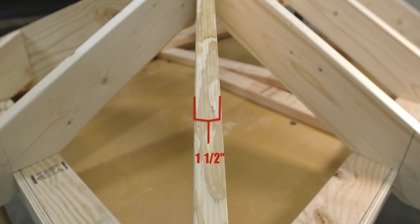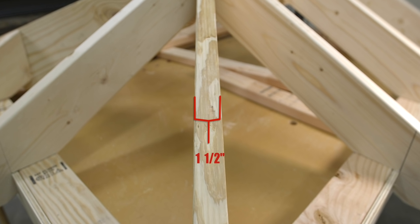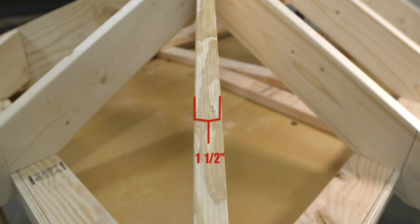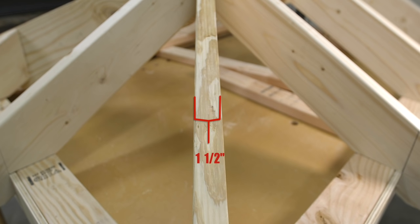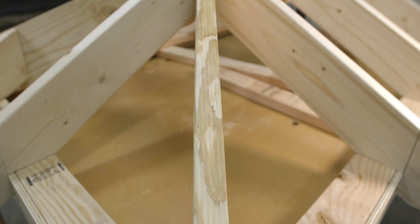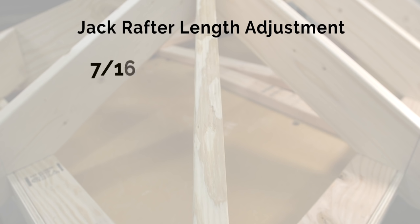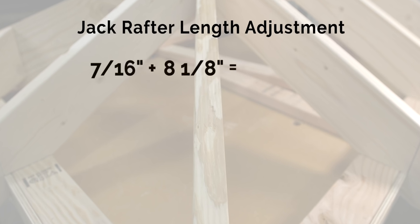we have to add seven sixteenths to the overall length of the jack rafters in order to get them to land exactly 16 on center. So all we have to do is simply add seven sixteenths to our eight and an eighth to get a total jack rafter length of eight nine sixteenths.